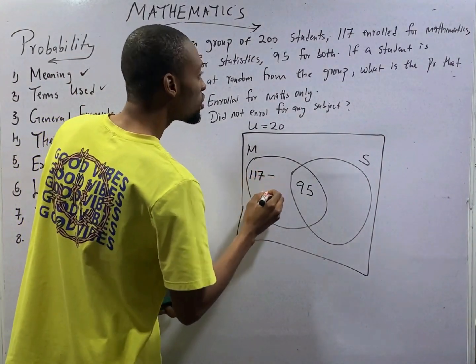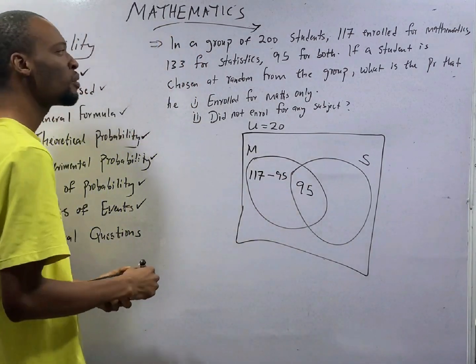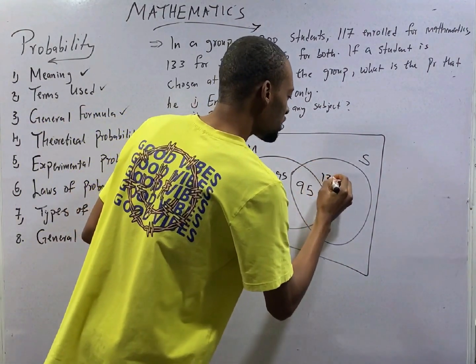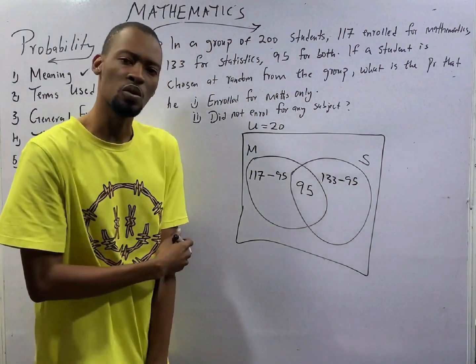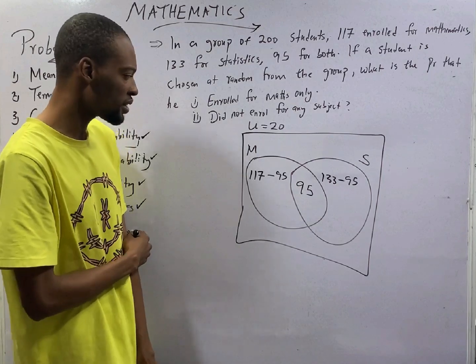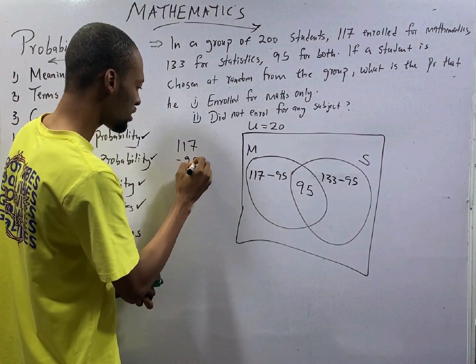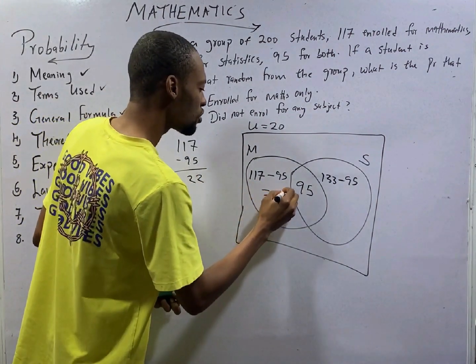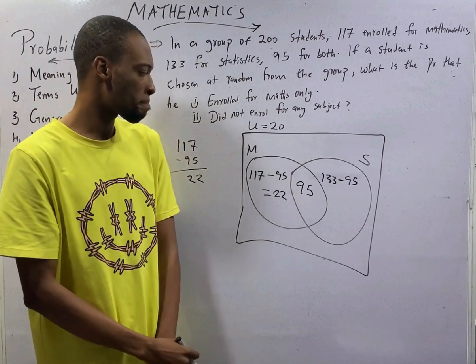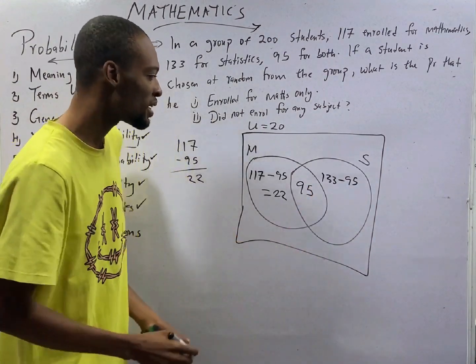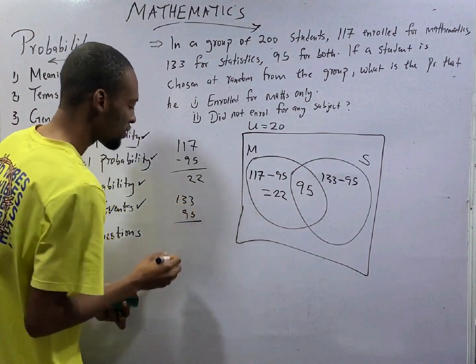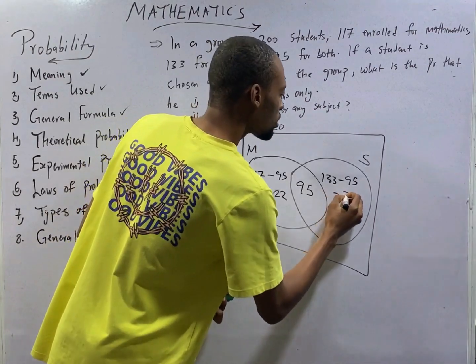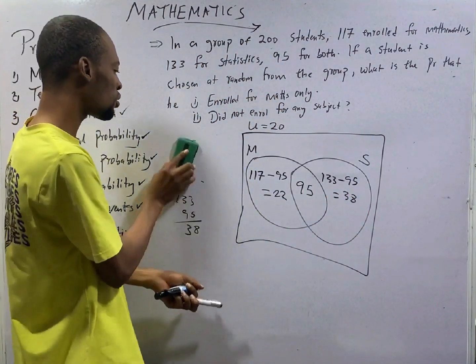For only mathematics, it would be 117 minus 95. That is 117 minus those who enrolled for both. For those who enrolled statistics only, it would be 133 minus 95, 133 minus those who enrolled for both. Now let's look at this. 117 minus 95 is 22. So this equals 22. 22 enrolled for only mathematics. 133 minus 95, 133 minus 5 is 8, 9, 10, 11, 12, 38. So this equals 38. 38 people enrolled for only statistics.